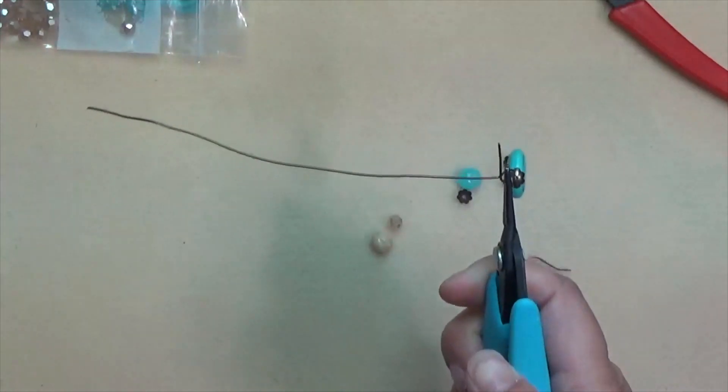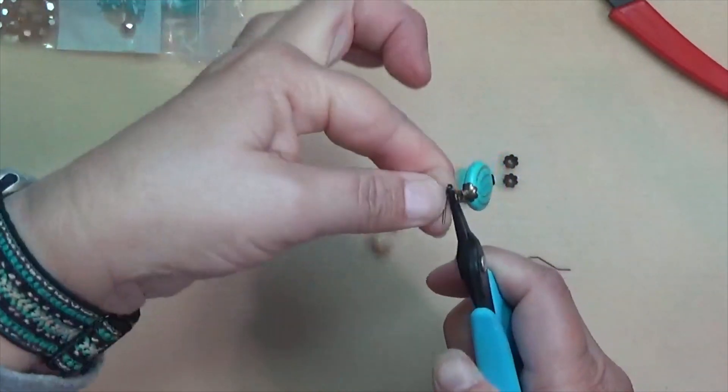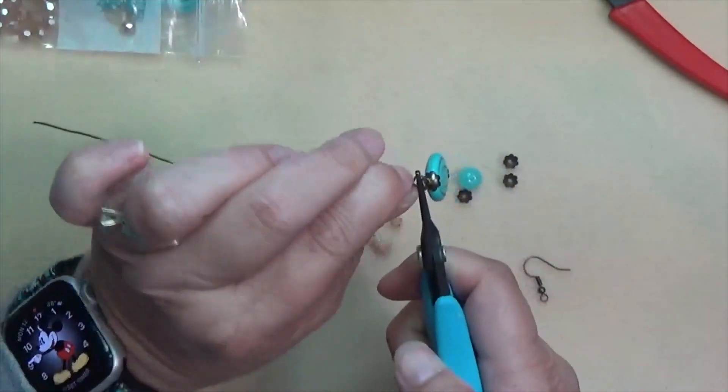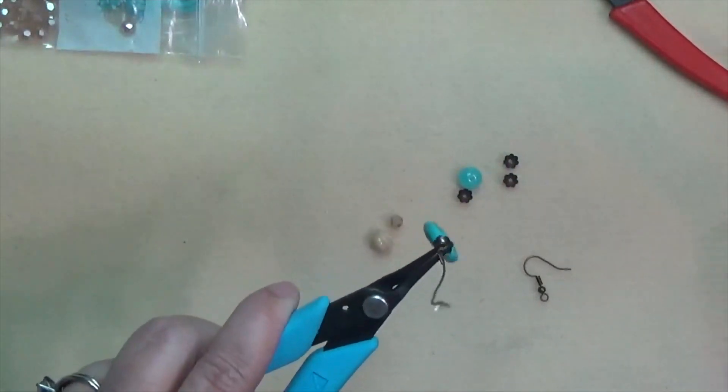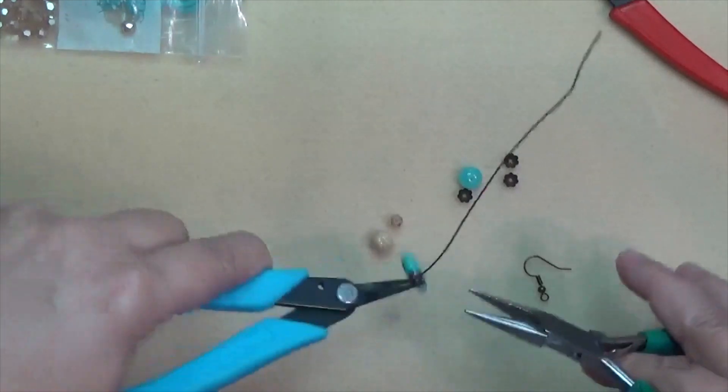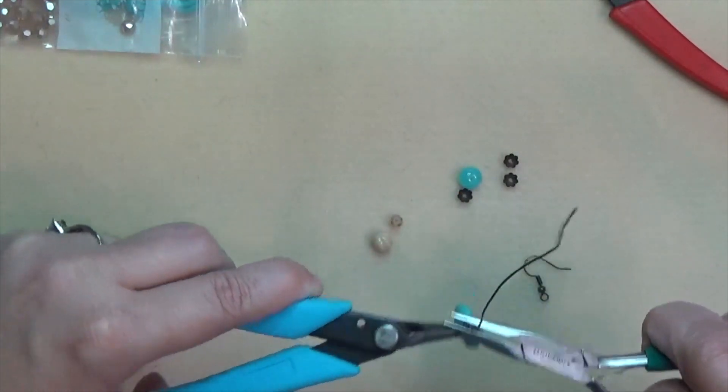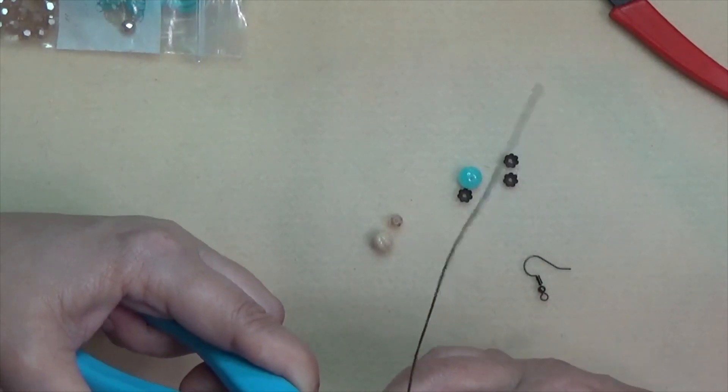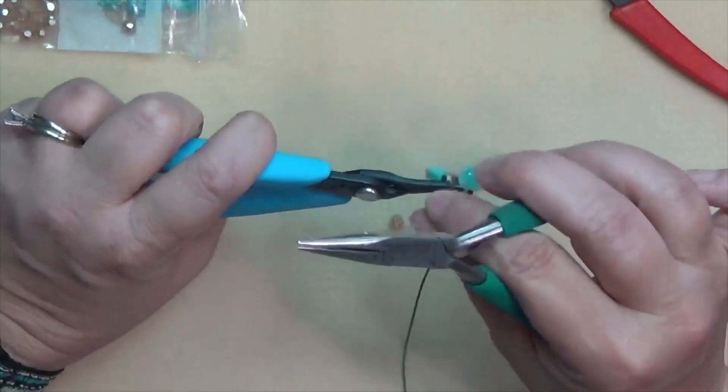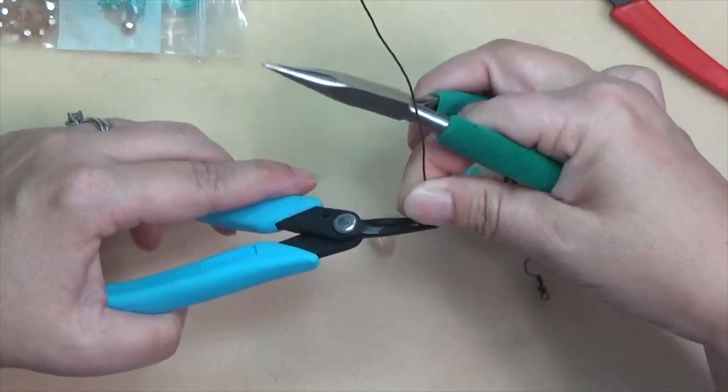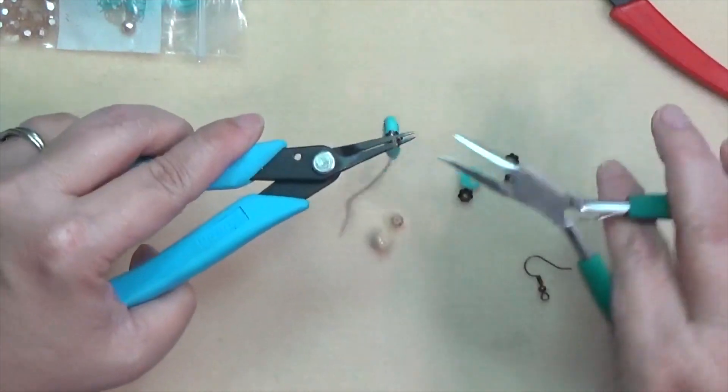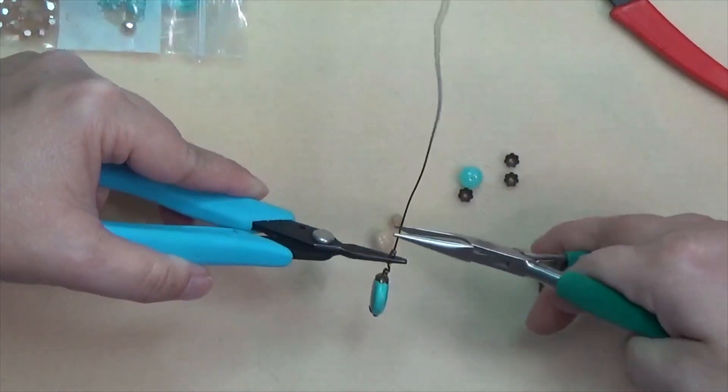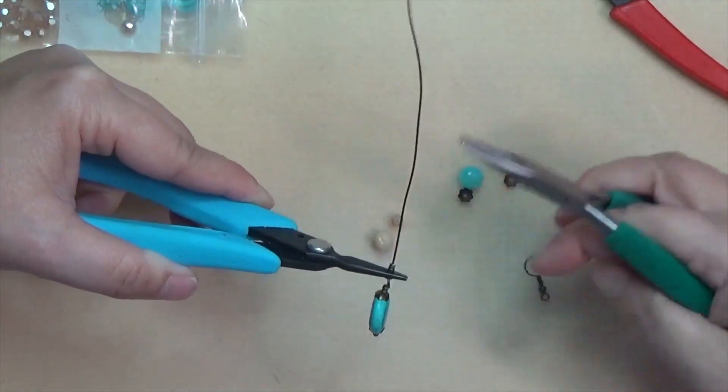Then we will close that loop and just hold it closed while we make our wraps all the way around. Now if it gets too short or if you prefer to use your chain nose pliers you can - I am going to grab them to finish that wrap. I tend to work over my lap, so I often will find myself pulling it closer and closer to me. Forgive me for that.